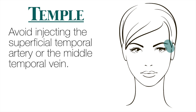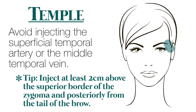The temple has twofold danger: the superficial temporal artery and the middle temporal vein. The superficial temporal artery, when injected, has been shown to deliver dye into both eyes, so it is very important to inject at least two centimeters above the superior border of the zygoma and posteriorly from the tail of the brow. The middle temporal vein drains into the jugular and is more likely to give pulmonary embolus rather than affecting the globe.